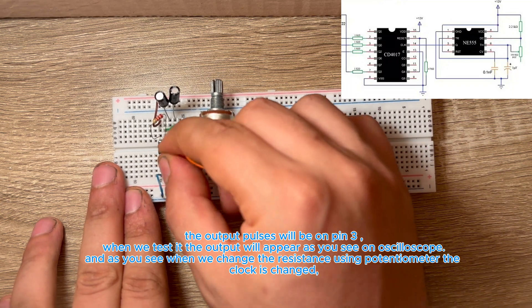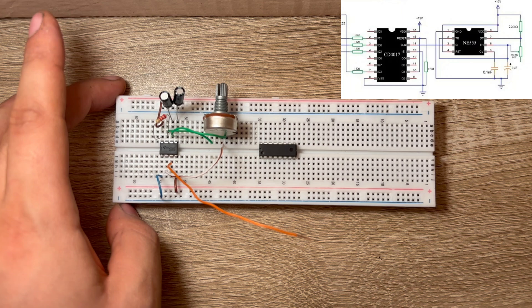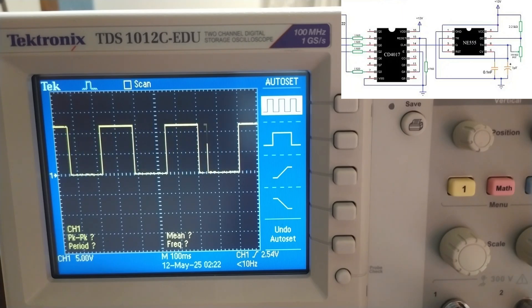The output pulses will be on pin 3. When we test it, the output will appear as you see on oscilloscope. And as you see, when we change the resistance using potentiometer, the clock is changed.